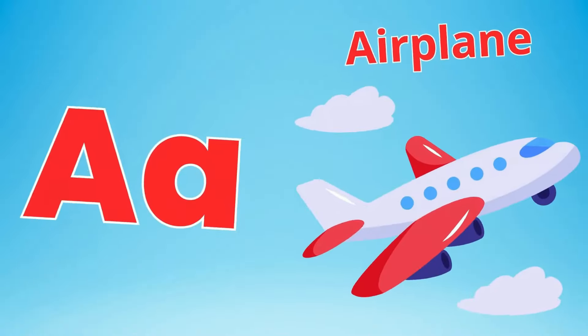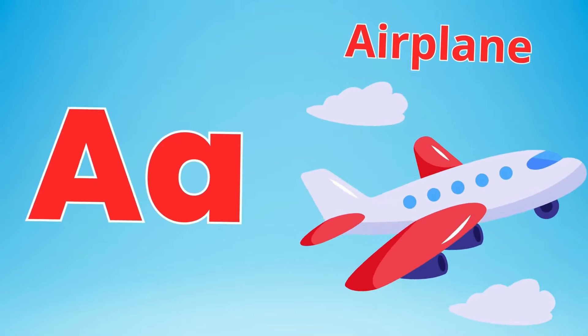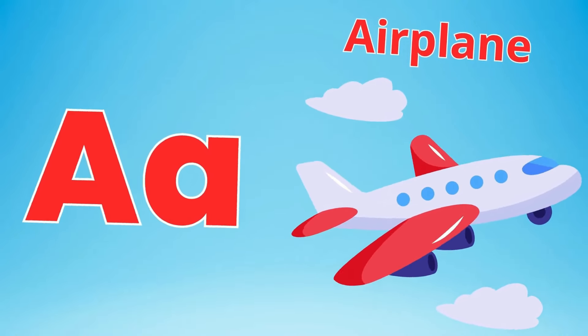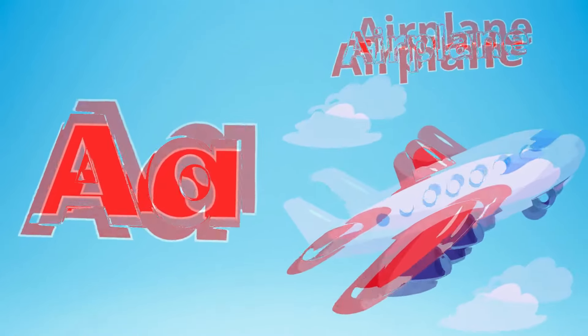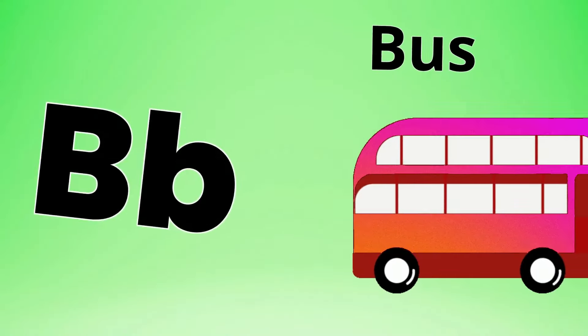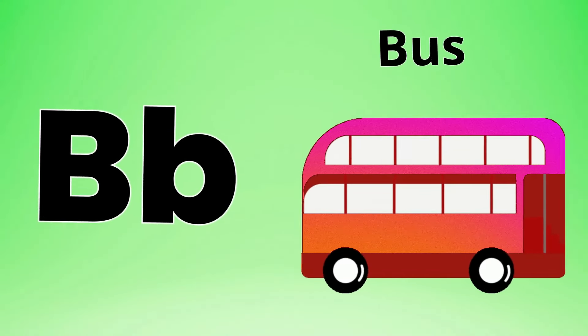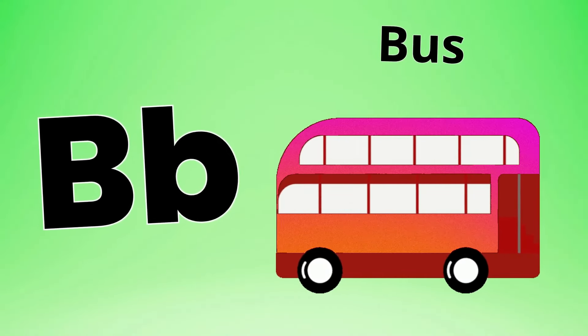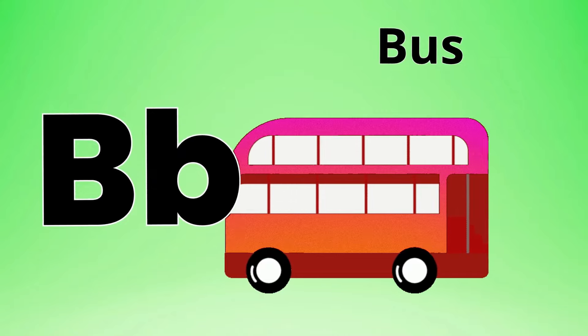A is for airplane, A-A airplane, flying through the sky, oh so high, airplane. B is for bus, ba-ba-bus, rolling down the street, beep-beep bus.